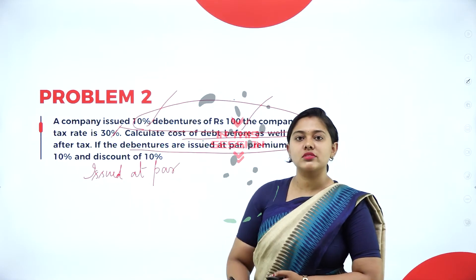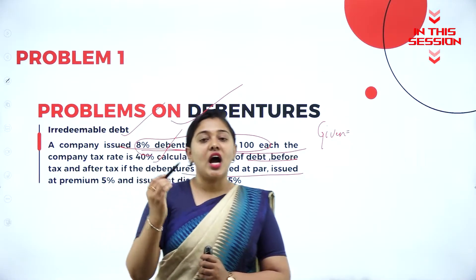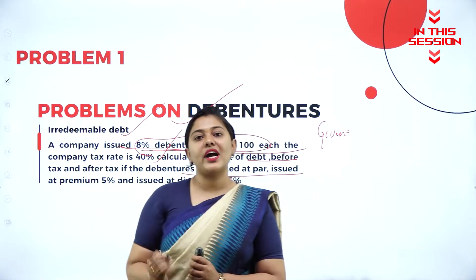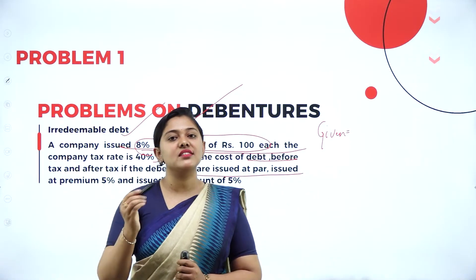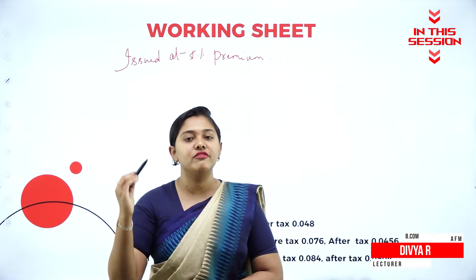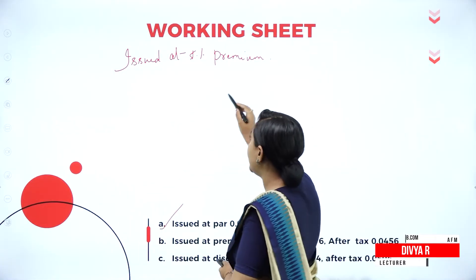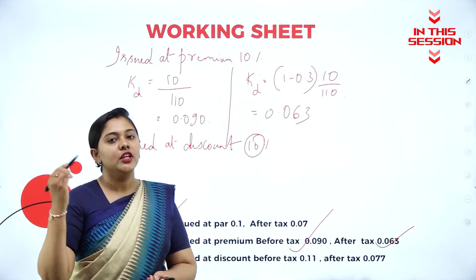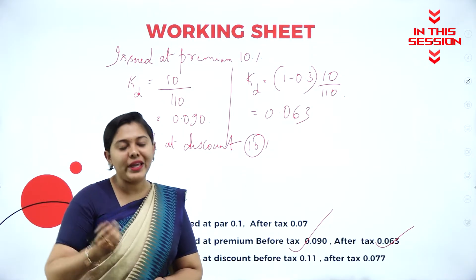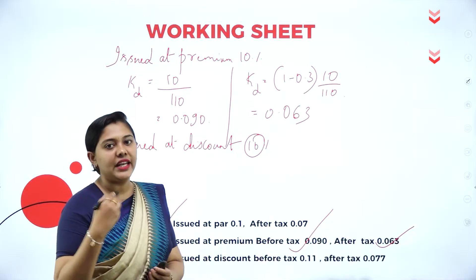After tax and before tax, what's the formula? Interest divided by net proceeds. For issuing the debenture, 100 rupees is the base value — that means it is nothing but your net proceeds. Premium is nothing but an extra, so 100 into 5% is 5 rupees, making 105 rupees your net proceeds. 100 into 10% is 10 rupees; if you subtract from 100, it will be 90 rupees.